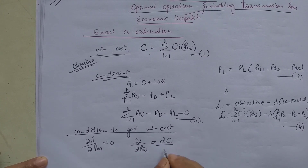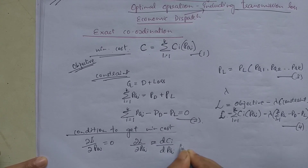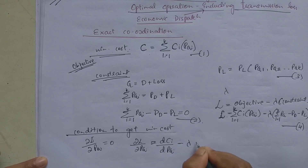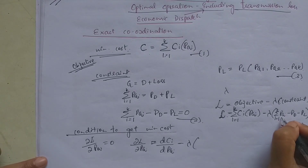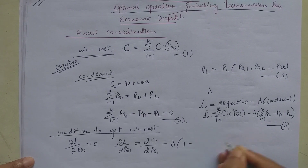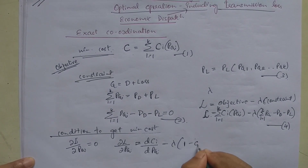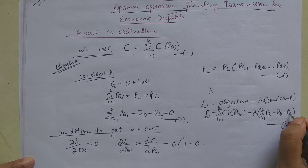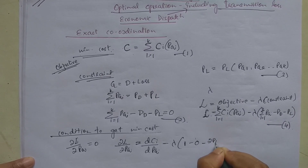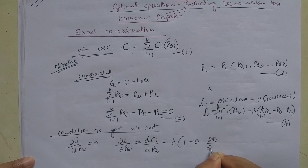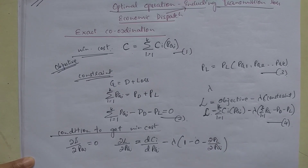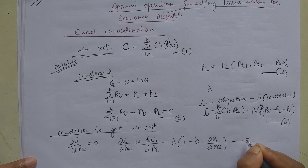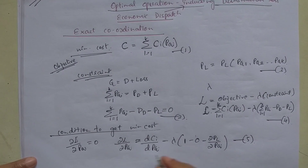Differentiating: the differentiation of C_i with respect to P_Gi, minus lambda times — the differentiation of P_Gi with respect to P_Gi is 1, the differentiation of P_D is 0, and since P_L is a function of active power generation at each plant, we take its partial differentiation with respect to P_Gi — take this as equation 5.